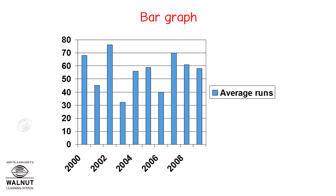It is the height of the bar that tells us its value. Here, we know that this graph shows us the average runs that a batsman made each year. As you can see, the average has changed every year — you can quickly see how it has increased or decreased over the years. This is a very easy way of analyzing information. Such a presentation of data is known as a bar diagram or a bar graph.